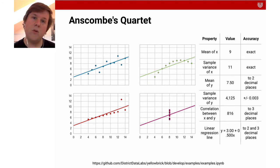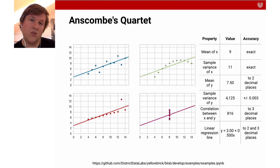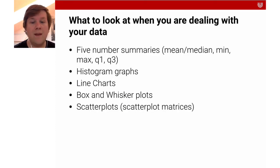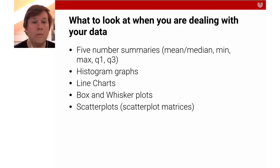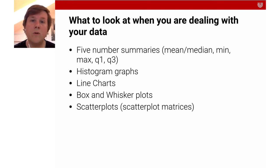This is an important indication that looking at just the numbers, looking at just the aggregate statistics, is not enough. It doesn't mean you should not use the five-number summaries — they're a very good starting point — but combine them with histogram graphs, line charts, box-and-whisker plots, and scatter plots. In combination, that will give you a much more holistic overview of the data you have.